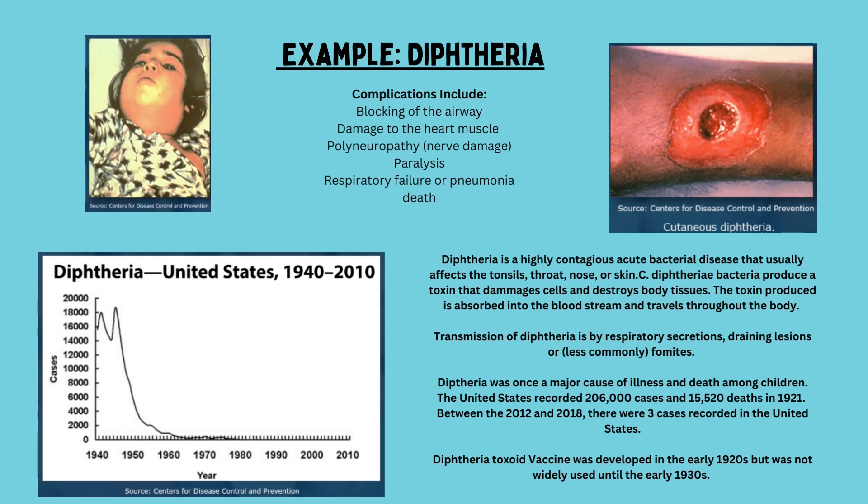Transmission of diphtheria is by respiratory secretions, draining lesions, or less commonly fomites — objects you touch, like a door handle or computer keyboard, that someone else then touches and obtains the bacteria or virus. Diphtheria was once a major cause of illness and death among children. The United States recorded 206,000 cases and over 15,000 deaths in 1921. Between 2012 and 2018 there were only three recorded cases in the United States. The diphtheria toxoid vaccine was developed in the early 1920s but wasn't widely used until the early 1930s.